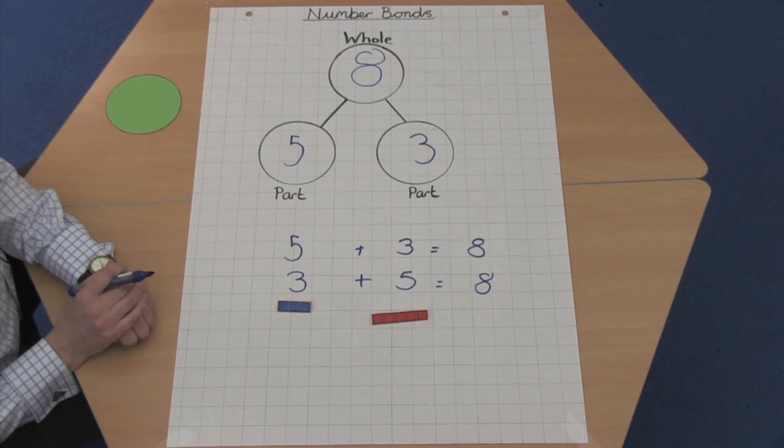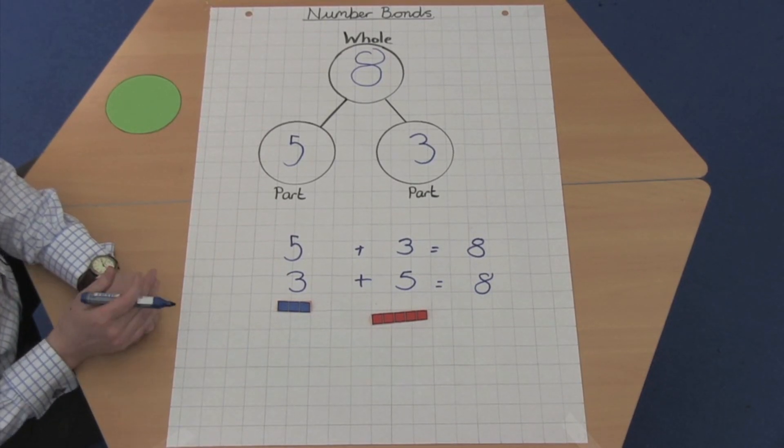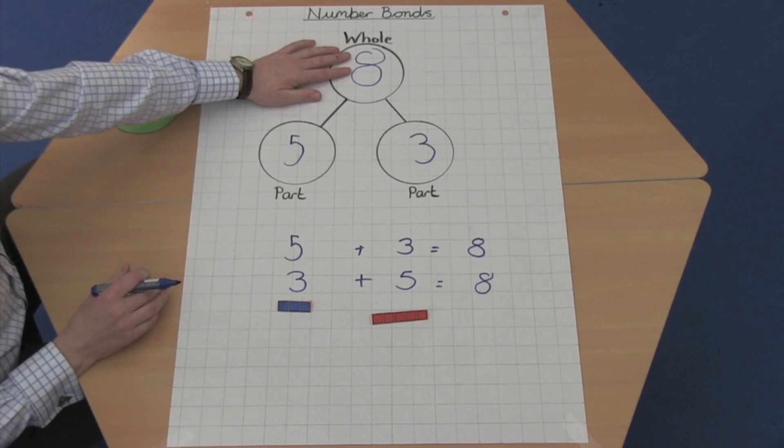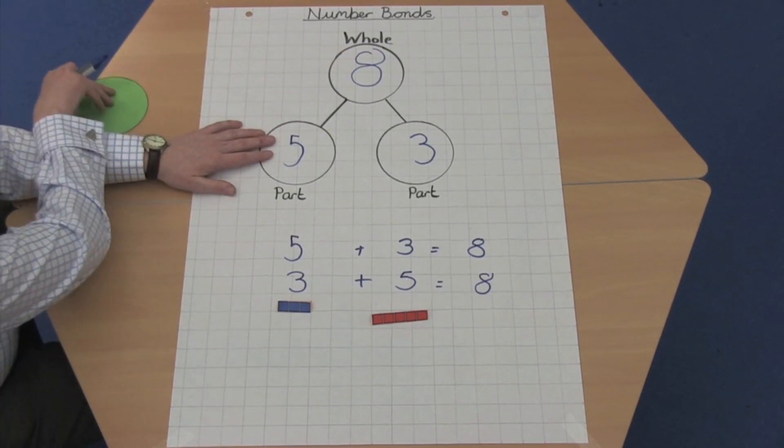Once confident, subtraction can also be simply explained. Subtraction always starts when we know the whole, in this case eight, and one of the parts, let's say five.